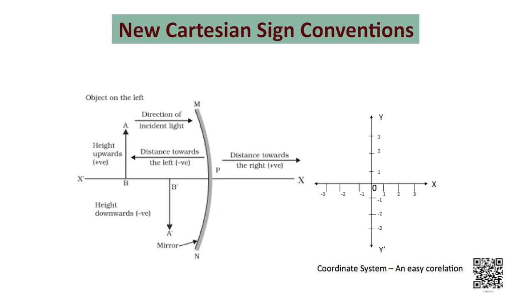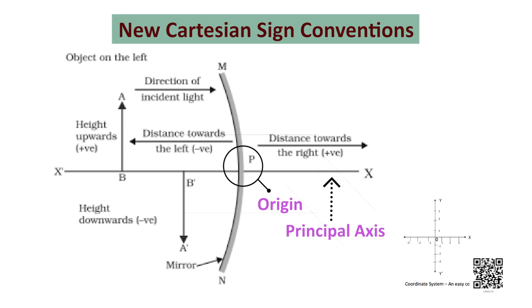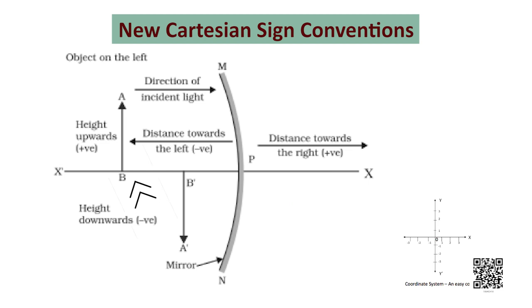While dealing with the reflection of light by spherical mirrors, we shall follow a set of sign conventions called the new Cartesian sign conventions. In this convention, the pole P of the mirror is taken as the origin. The principal axis of the mirror is taken as the x-axis of the coordinate system. The object is always placed to the left of the mirror, which implies that the light from the object falls on the mirror from the left-hand side. All distances parallel to the principal axis are measured from the pole of the mirror.